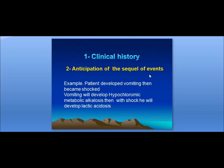Anticipation of the sequelae of events — like what? If the patient develops vomiting and then becomes shocked: vomiting will develop hypochloremic metabolic alkalosis, and then shock will develop high anion gap metabolic acidosis.